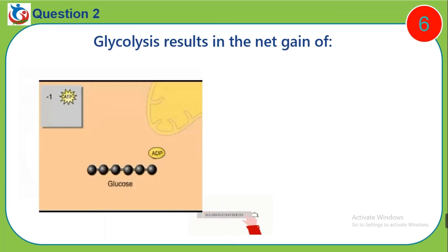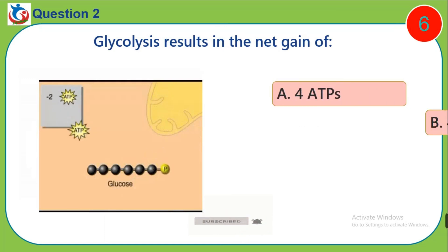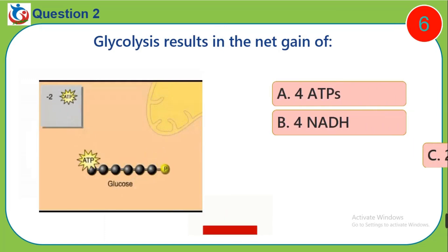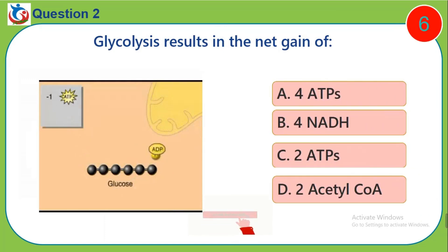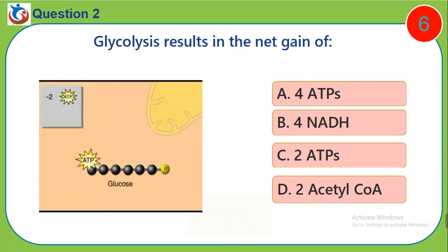Question 2. Glycolysis results in the net gain of: A. 4 ATPs. B. 4 NADH. C. 2 ATPs. D. 2 acetyl-CoA.